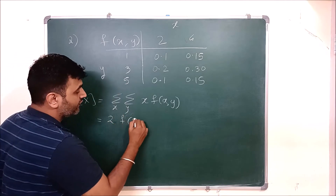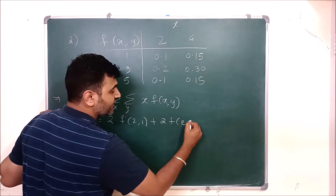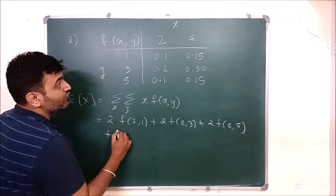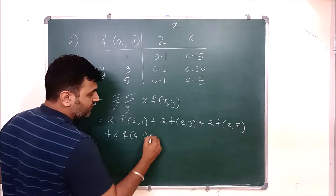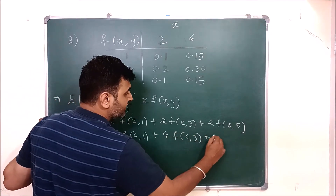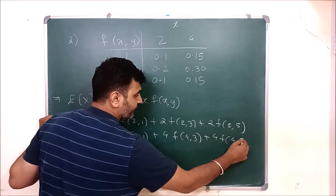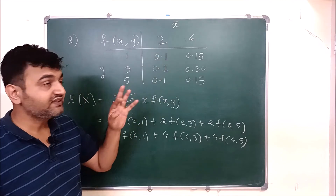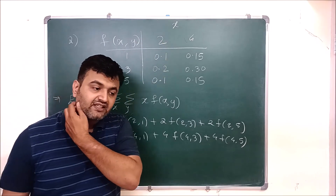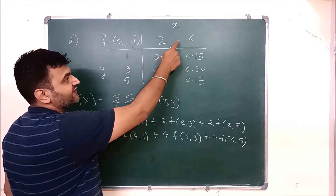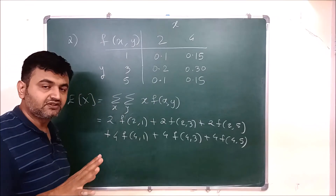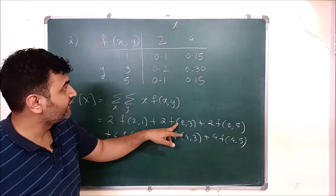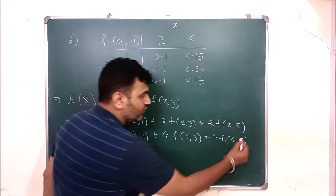Always check where X and Y are written in the table, because many people in a hurry confuse the rows and columns. So f(2,1) = 0.1, f(2,3) = 0.2, and so on. Put the values in and you get some numbers for E[X].